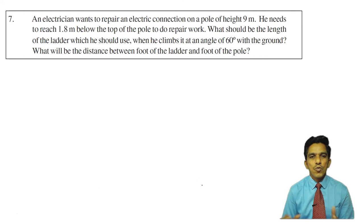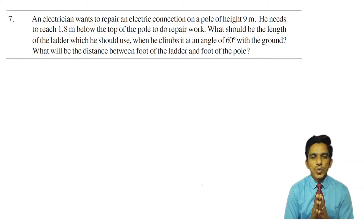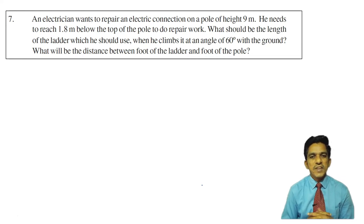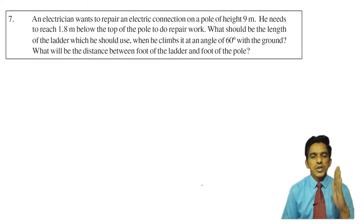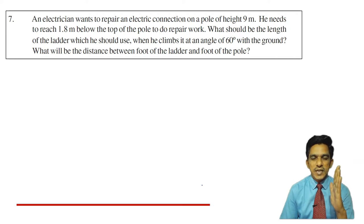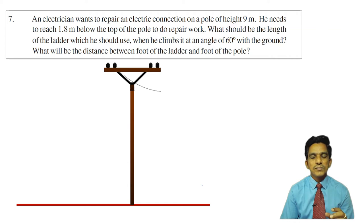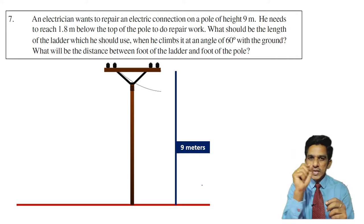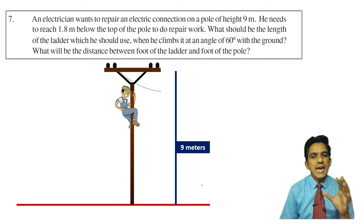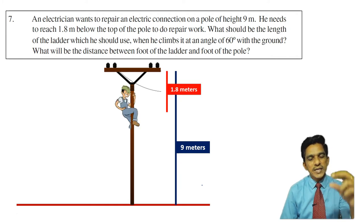Let us look at the seventh problem. An electrician wants to repair an electric connection on a pole of height 9 meters. He needs to reach 1.8 meters below the top of the pole to do repair work. What should be the length of the ladder which he should use when he climbs at an angle of 60 degrees with the ground? What will be the distance between the foot of the ladder and the foot of the pole?